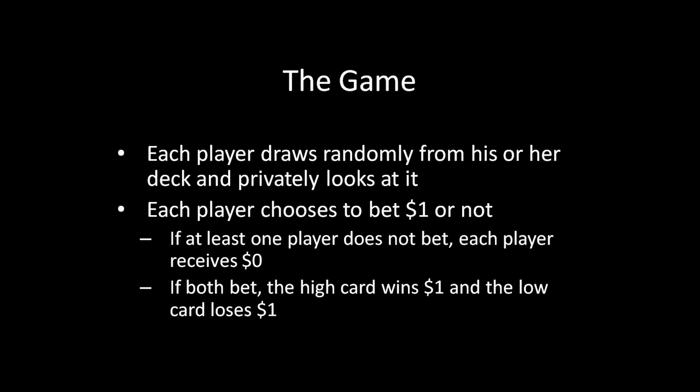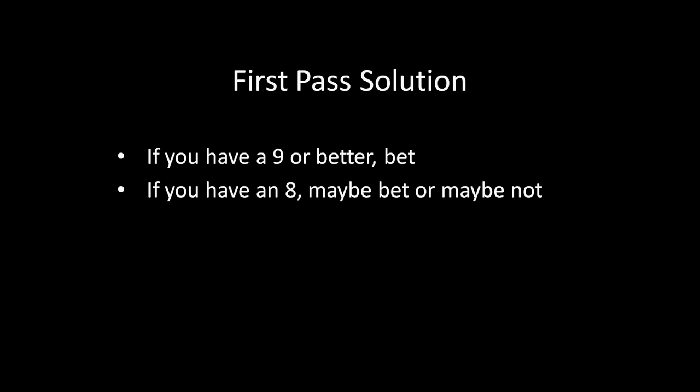A first-pass solution that a lot of people give to this game is that if you have a 9 or better, you should bet; if you have an 8, maybe you should bet, maybe you shouldn't; and if you have a 7 or lower, then you definitely shouldn't bet. The idea is that 8 is the median card, so if you have a 9 or better, there's greater than a half chance you're holding a card higher than your opponent's. Unfortunately, that's actually not the solution, and you're going to see why in just a moment.